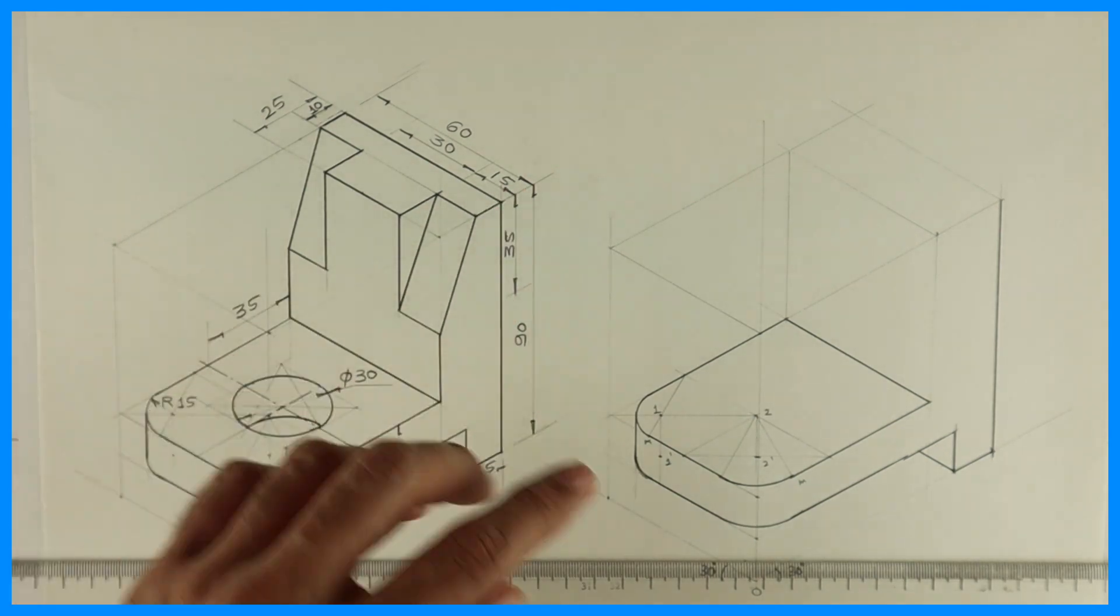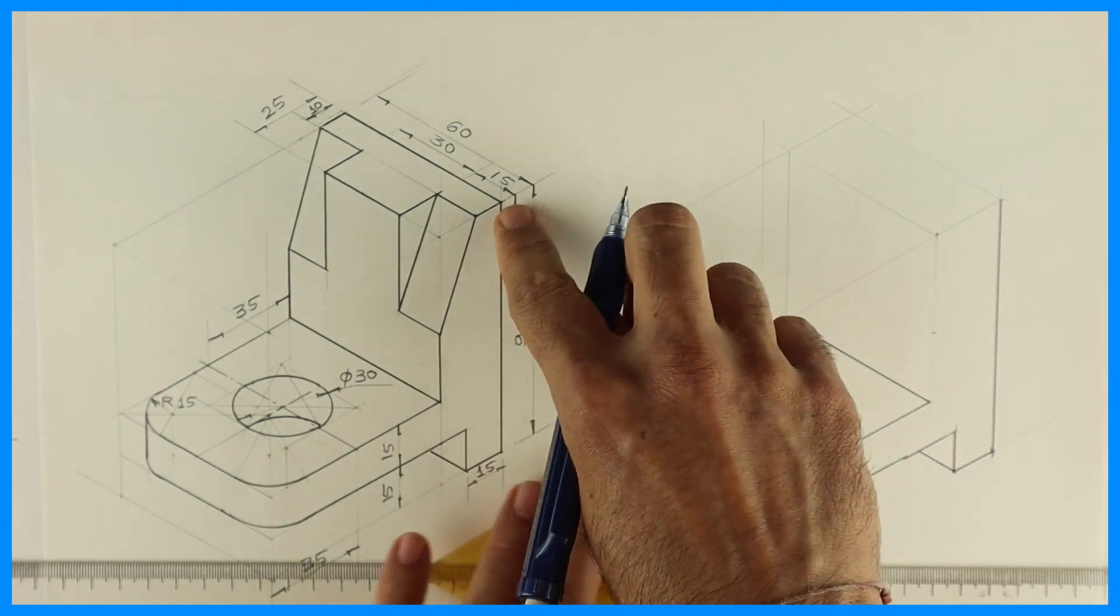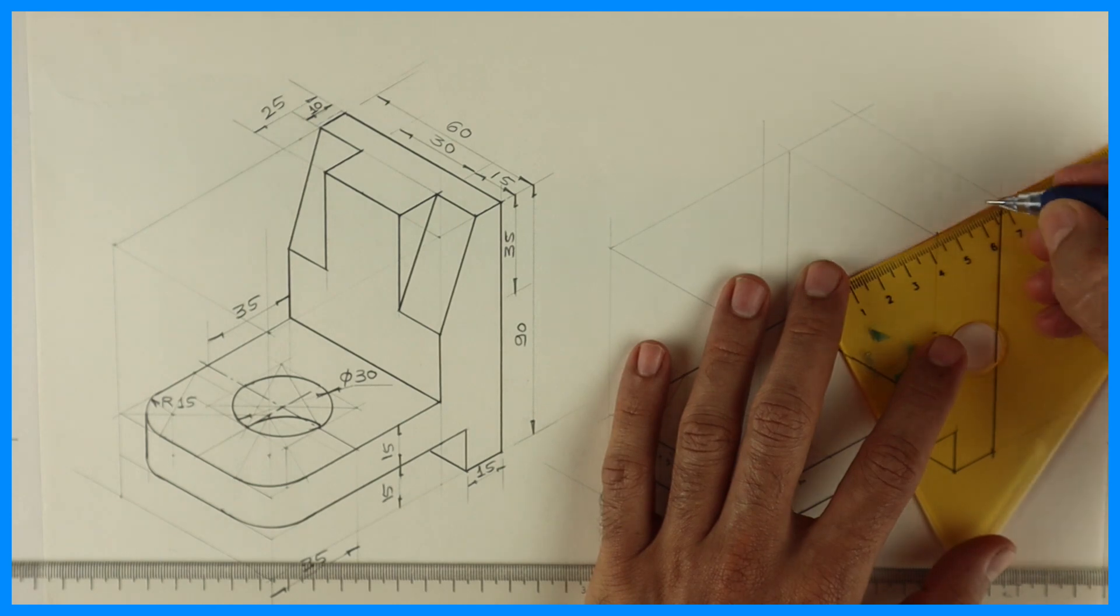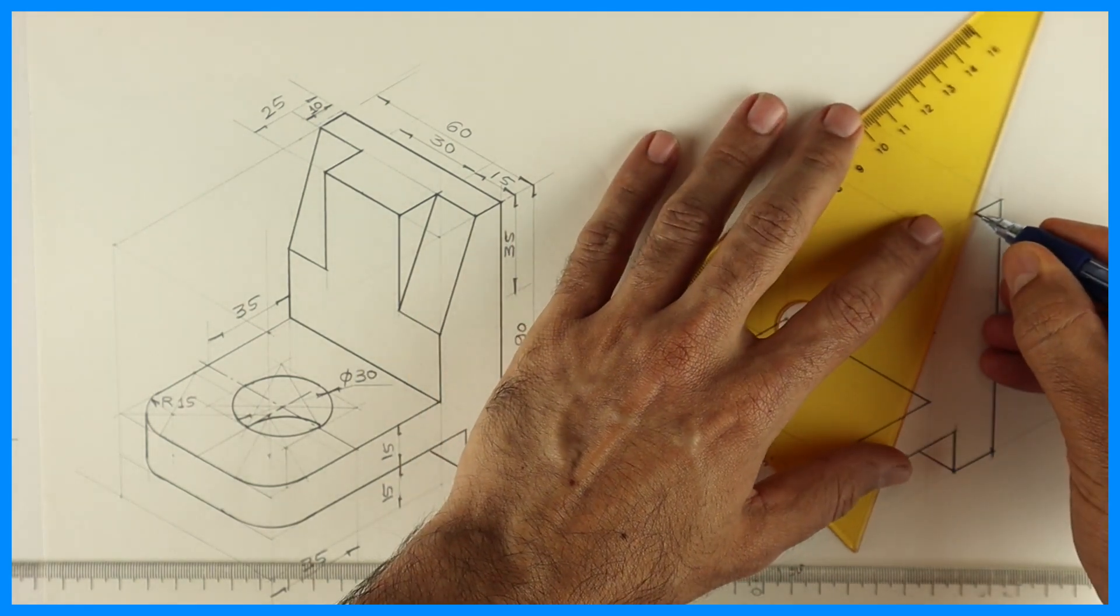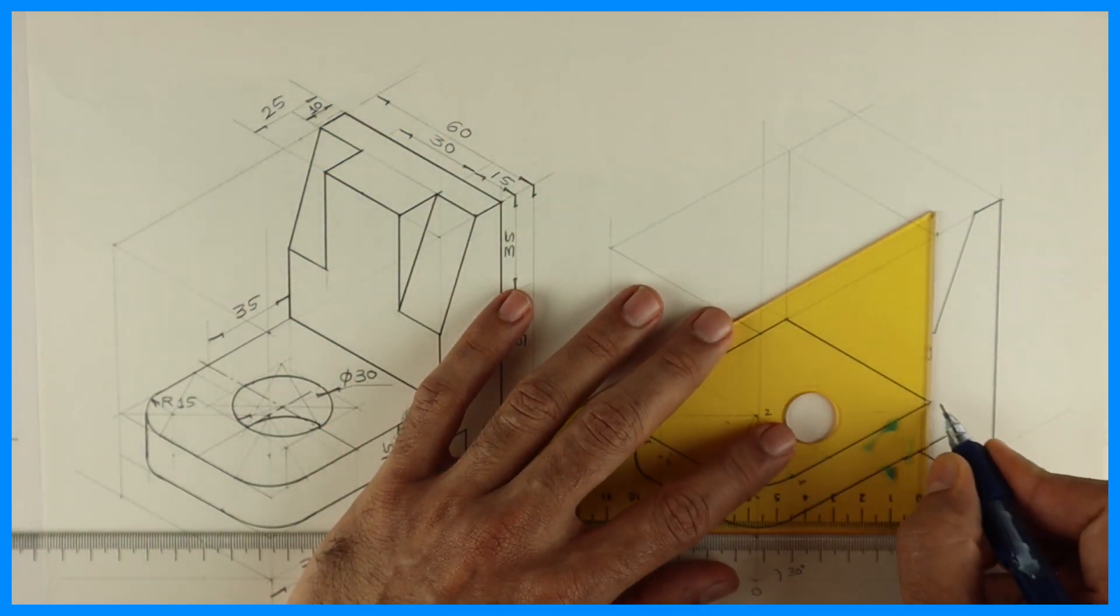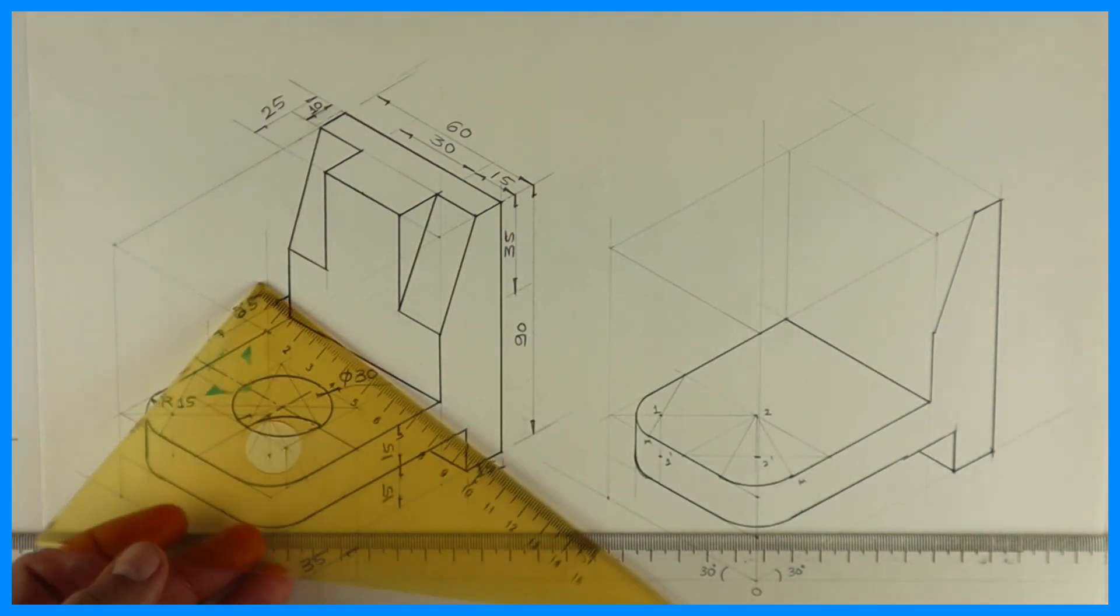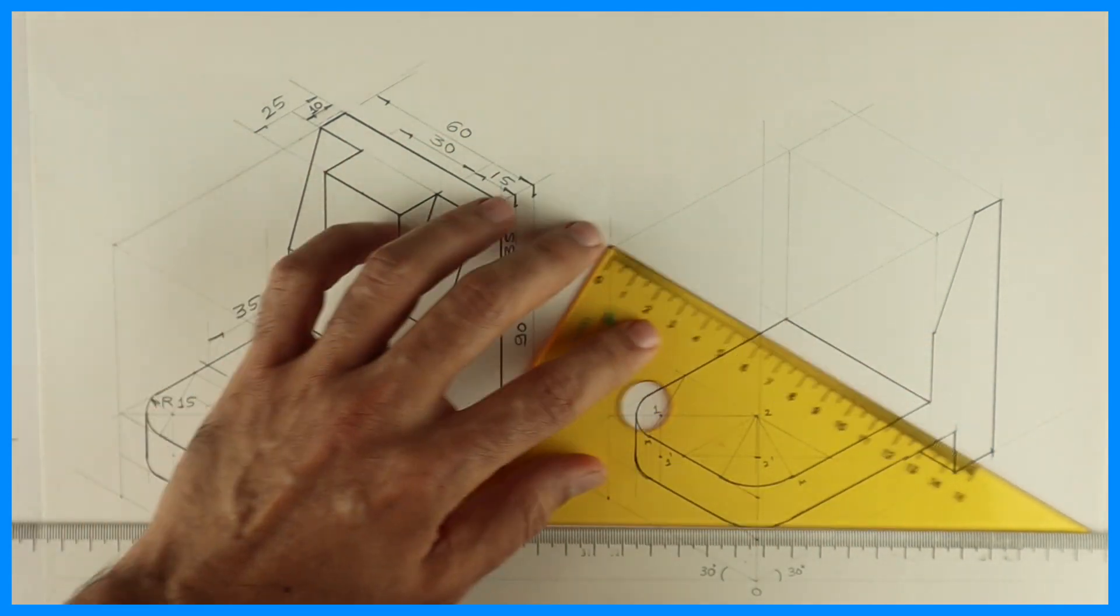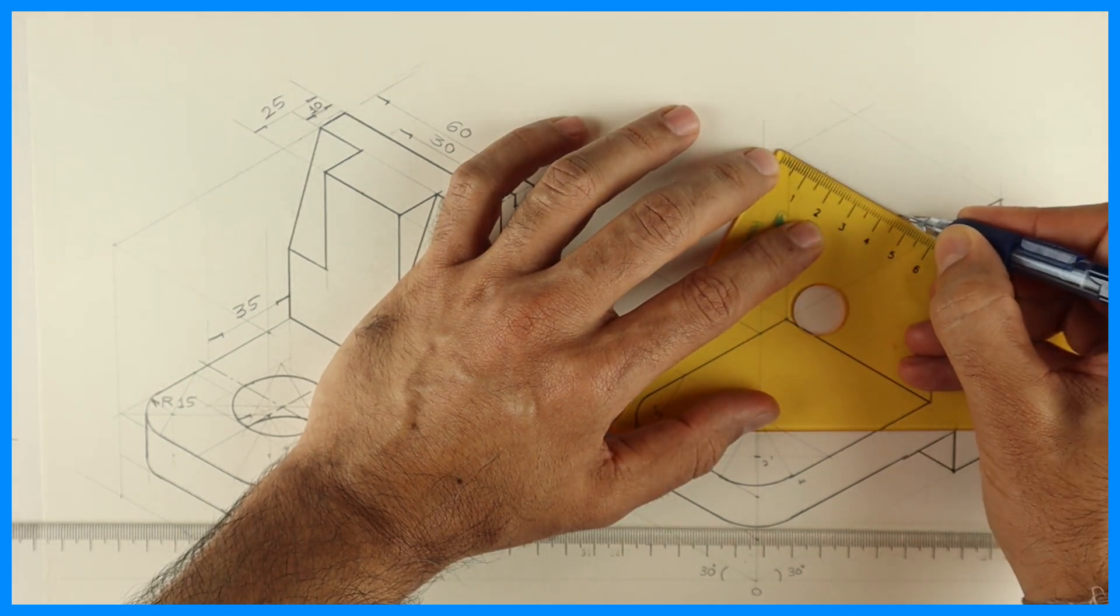Now if you see how much is this, 35, so you take 35 from here. And how much is this, 10, so you take 10 from there. And you join this directly with scale. Now same way you take this, how much is this, 15, 30, 15. So you take it behind, 15, 30, 15.